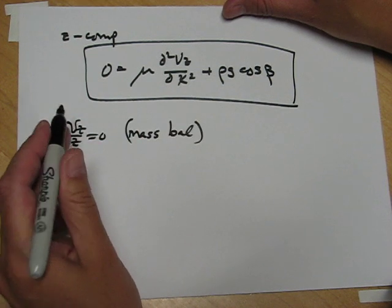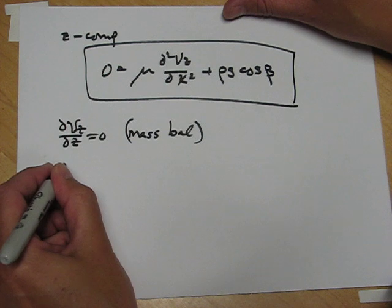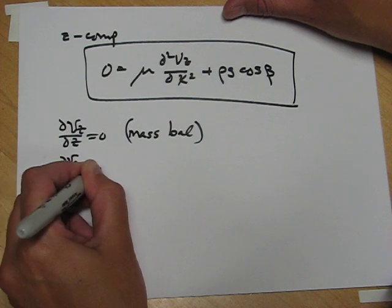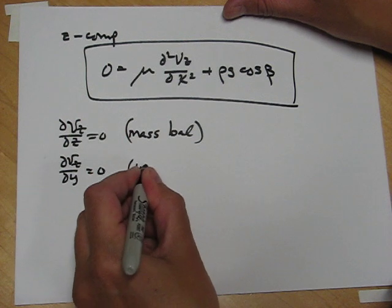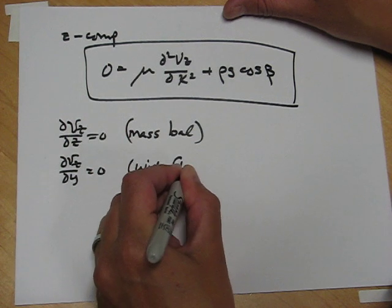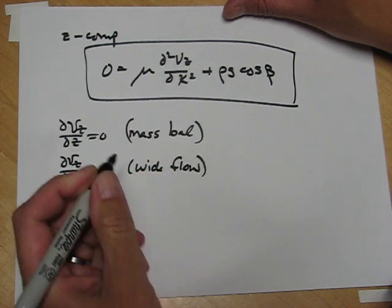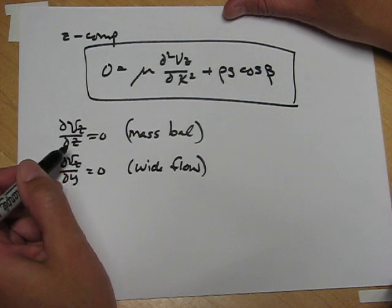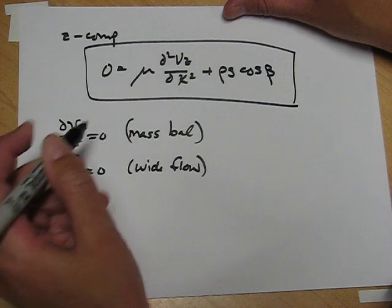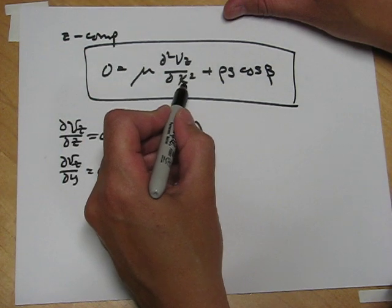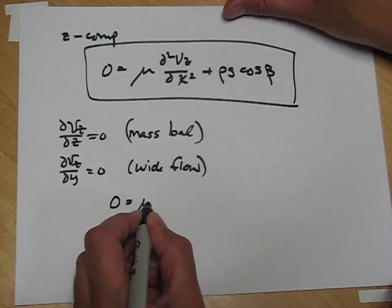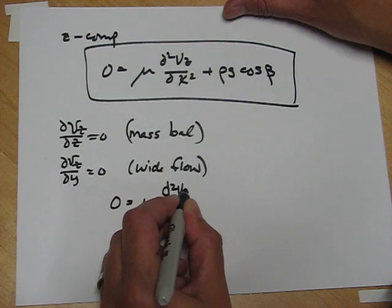At our most immediate previous step, we assumed that due to wide flow, there was no variation in the y direction. These two facts tell us that the velocity is not a function of z and not a function of y, which means it's only a function of x. So because it's now only a function of x, I can change those partial derivatives to total derivatives.